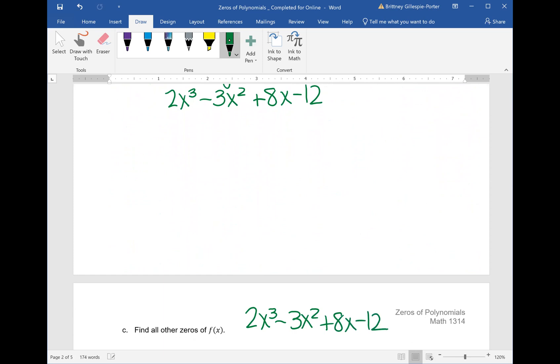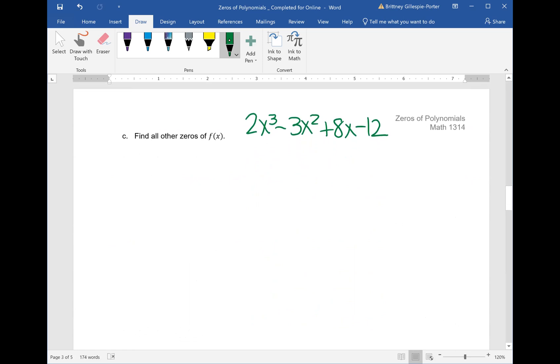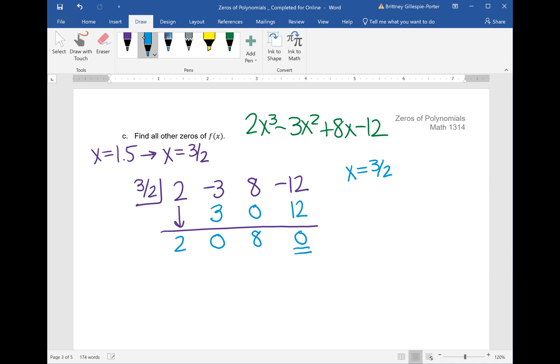We're going to use that in our next part where it says find all other zeros of f(x). When we were graphing, we found that x equal to 1.5 was also an x-intercept. Convert that back to a fraction, we get x equal to 3 halves. So let's use 3 halves in our next synthetic division. We would have 2, -3, 8, -12. First one always goes to the floor. Carry the 2 down. 3 halves times 2 gets us 3. Add vertically, we get 0. 3 halves times 0 is 0. Add vertically, we get 8. 3 halves times 8 gets us 12. Add vertically, we get 0. We just found out that x equal to 3 halves is a 0.